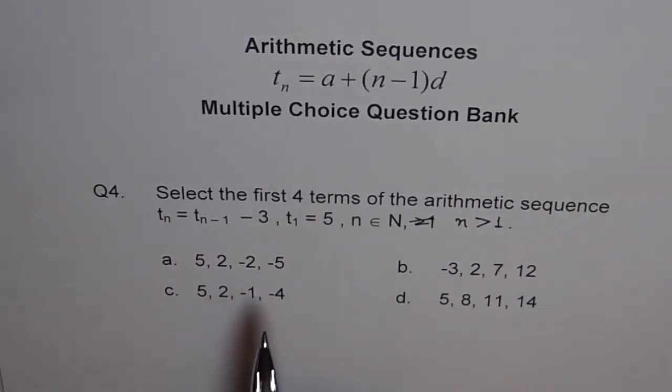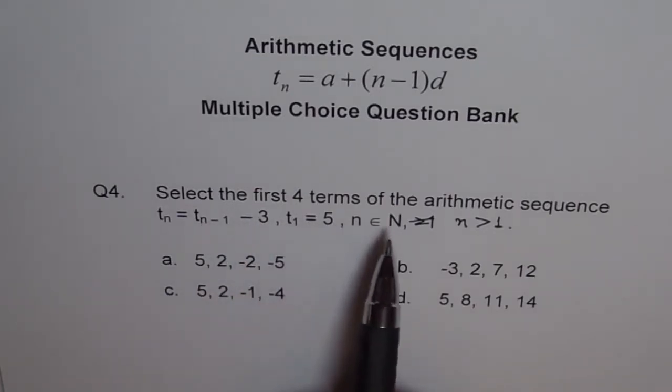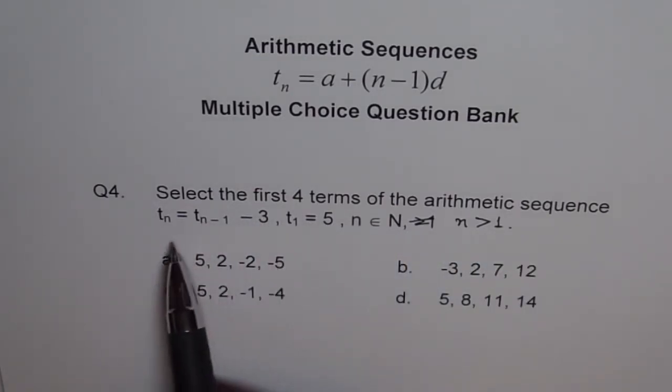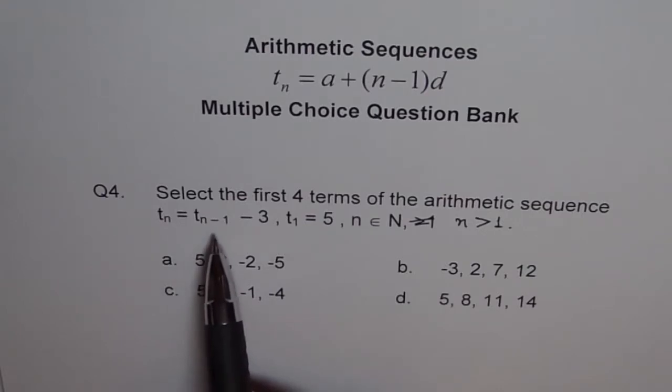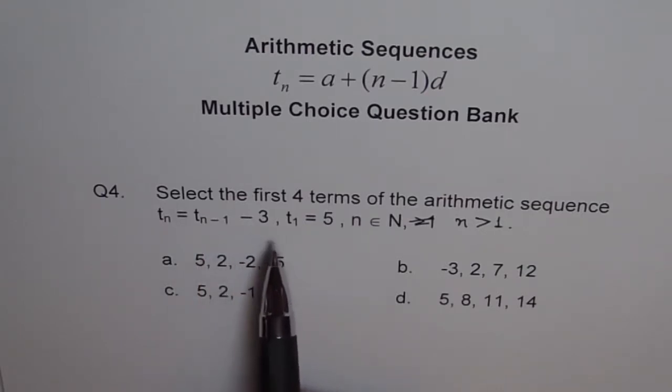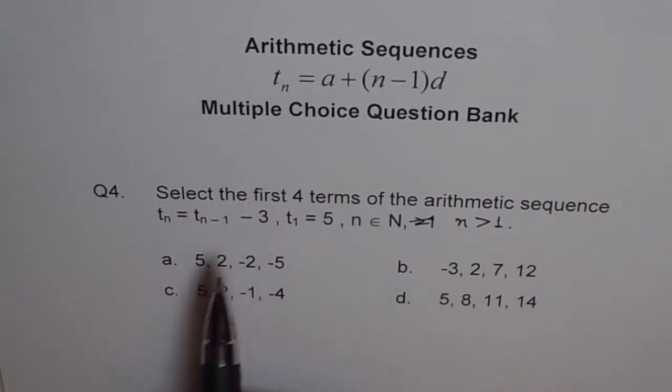Now, let us look into this question once again. Select the first 4 terms of the arithmetic sequence. Tn equals Tn minus 1 minus 3 where T1 is 5. I normally read the formula like this. Tn equals previous term minus 3. It helps. n minus 1 means previous term. So if you use this in your thought, n minus 1 as previous term, it becomes much simpler. Okay?